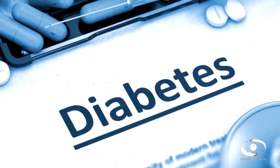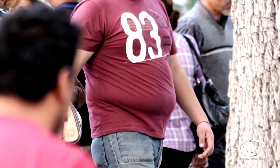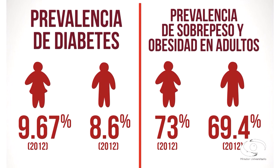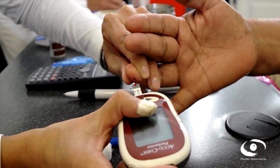Lo podemos evitar si detectamos a tiempo que estas personas están desarrollando diabetes, para que entren en control. Si entran en control de sus niveles de glucosa, estas consecuencias pueden disminuirse, retrasarse o incluso evitarse. La medicina preventiva es la mejor opción. Además, normalmente el promedio de edad en que la persona desarrolla diabetes es entre los 55 y 60 años, pero estamos teniendo casos de gente joven y de niños.